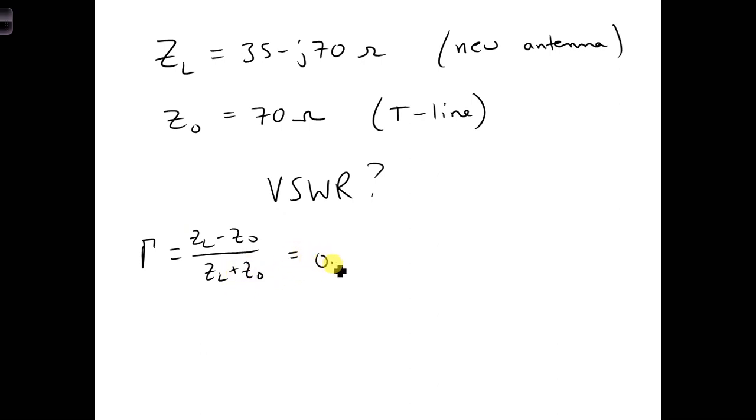Once we plug this in, we get 0.54 plus J 0.31. The magnitude of the reflection coefficient is 0.62. This is the voltage reflection coefficient at the load.